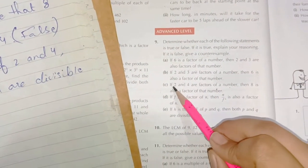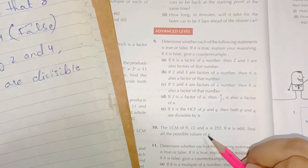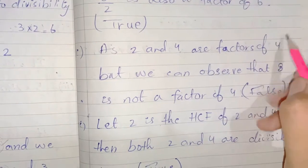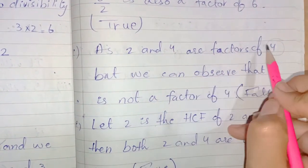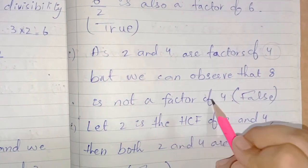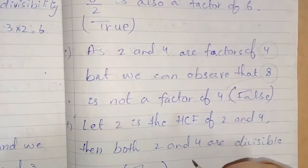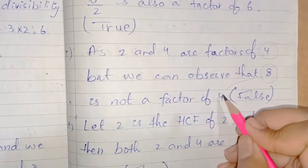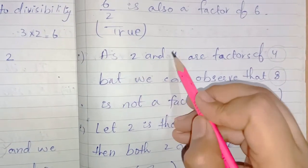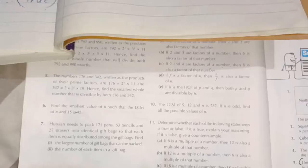Statement C: if 2 and 4 are factors of a number, then 8 is also a factor of that number. As 2 and 4 are both factors of 4, but 8 is not a factor of 4 — because 4 does not appear in the table of 8. Also, the LCM of 2 and 4 is 4, not 8. So this is a false statement.